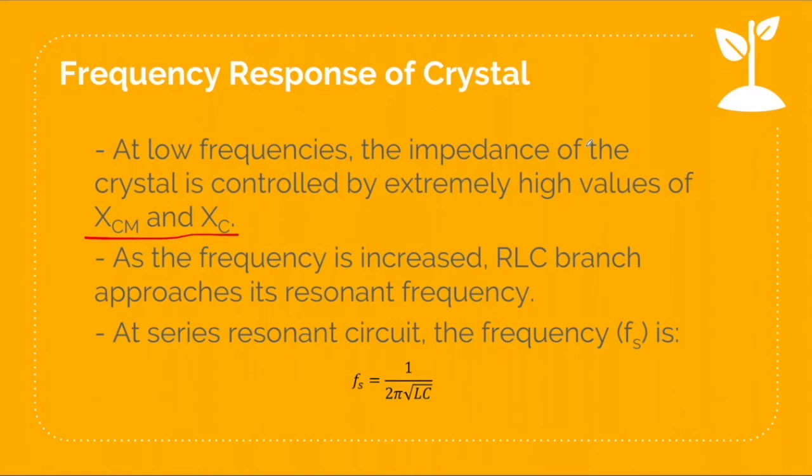Now, if we try to gradually increase the frequency, there will be a frequency where L and C will be at resonance. And that frequency is equal to 1 over 2 pi square root of LC.